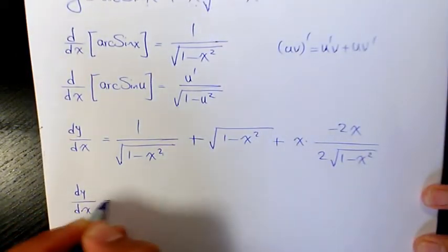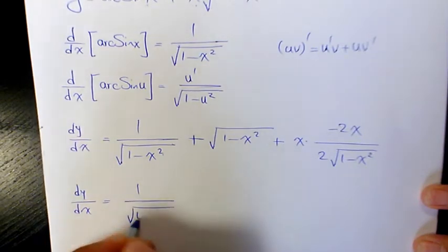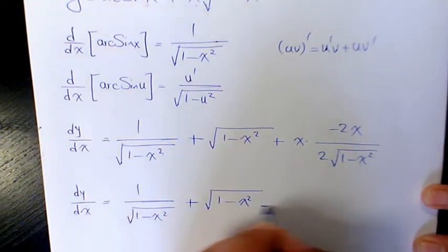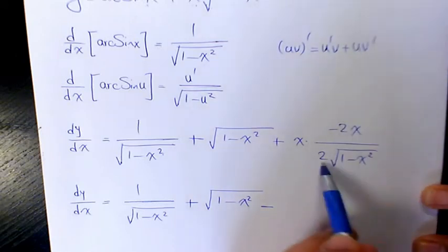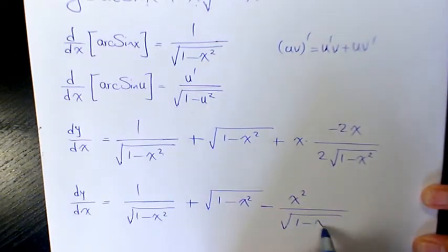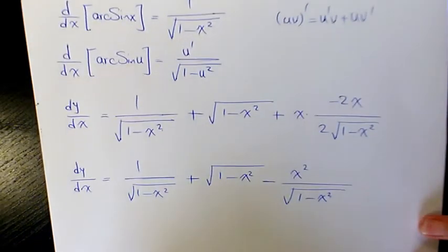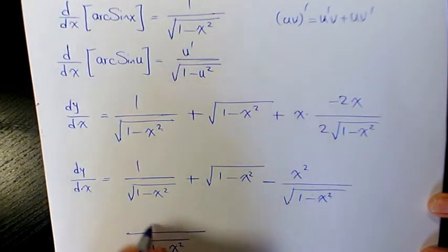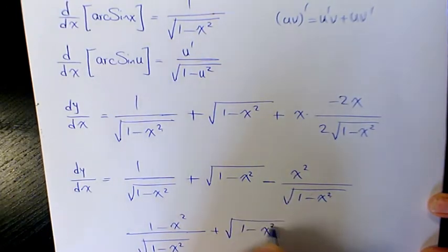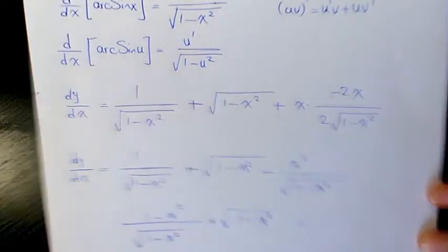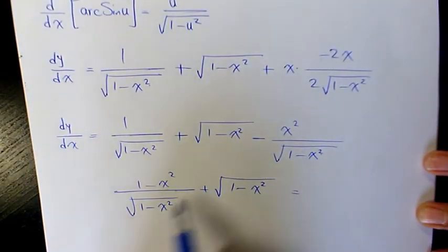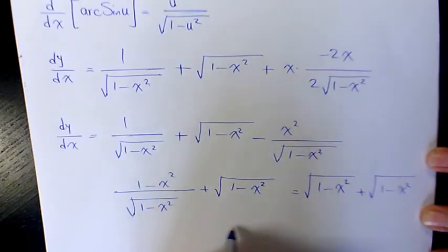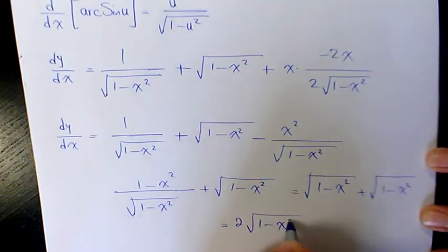When you simplify it, it's going to be 1 over square root of 1 minus x squared, plus square root of 1 minus x squared. These two have the same denominator, so combining: 1 minus x squared plus square root of 1 minus x squared, all divided by square root of 1 minus x squared. That gives square root of 1 minus x squared plus square root of 1 minus x squared, which equals 2 root of 1 minus x squared. That's the final answer.